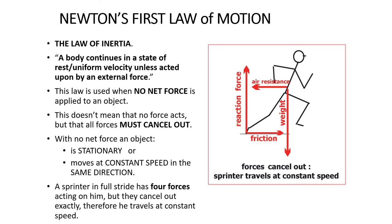And all of these forces cancel each other out and therefore the sprinter travels at a constant speed. If one of these forces were to change size, for example, the ground reaction force, so the force that the foot is pushing off of the ground starts to decrease, then that will cause a change in the sprinter's speed.